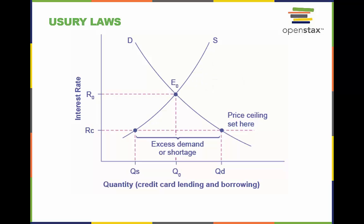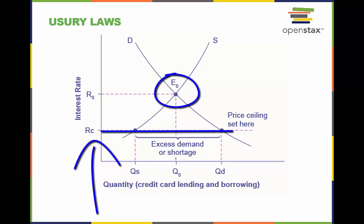Usury laws limit or restrict the borrowing of money and the interest rate charged for lending and borrowing. The original intersection of demand D and supply S occurs at equilibrium E0. However, a price ceiling is set at the interest rate RC, below the equilibrium interest rate R0, so the interest rate cannot adjust upward to the equilibrium. At the price ceiling, the quantity demanded QD exceeds the quantity supplied — there is an excess demand, also called a shortage.